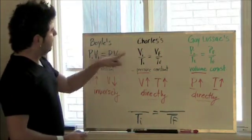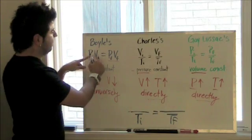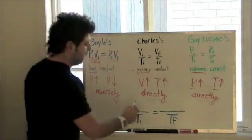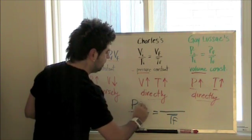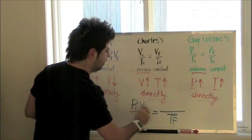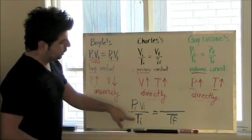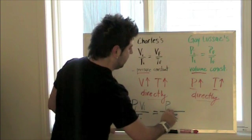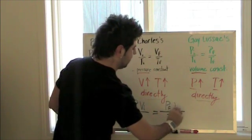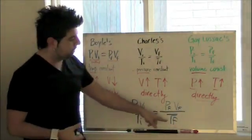Now, because volume is up in the numerator, pressure is up in the numerator, and pressure and volume are being multiplied together, if we multiply our initial pressure with our initial volume and divide it by the initial temperature, we're going to equal the final pressure multiplied by our final volume, divided by our final temperature.